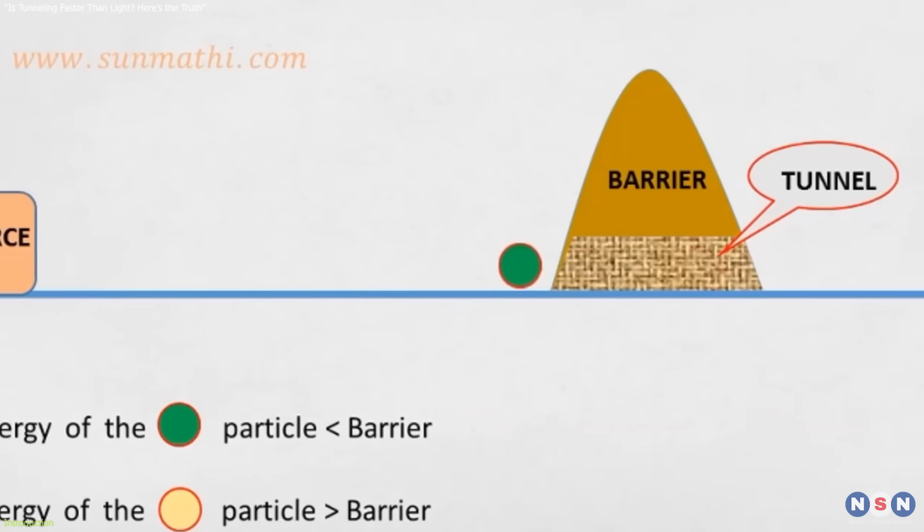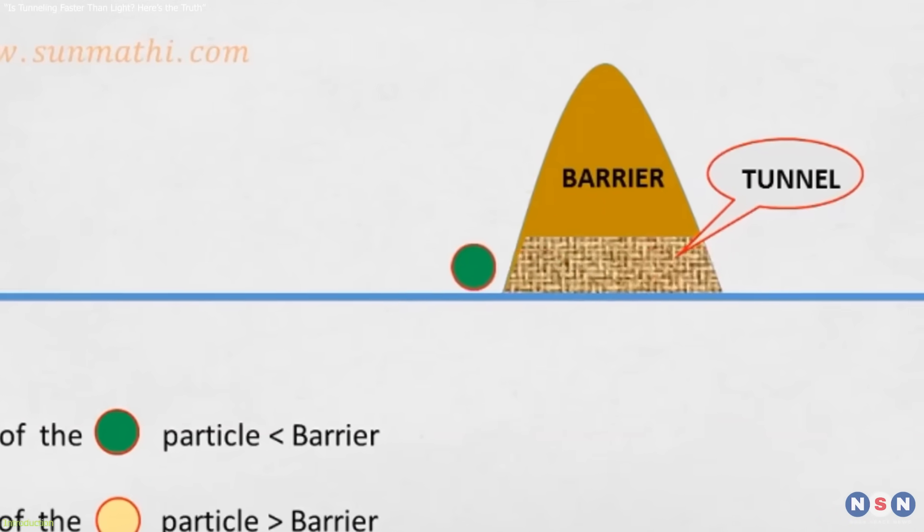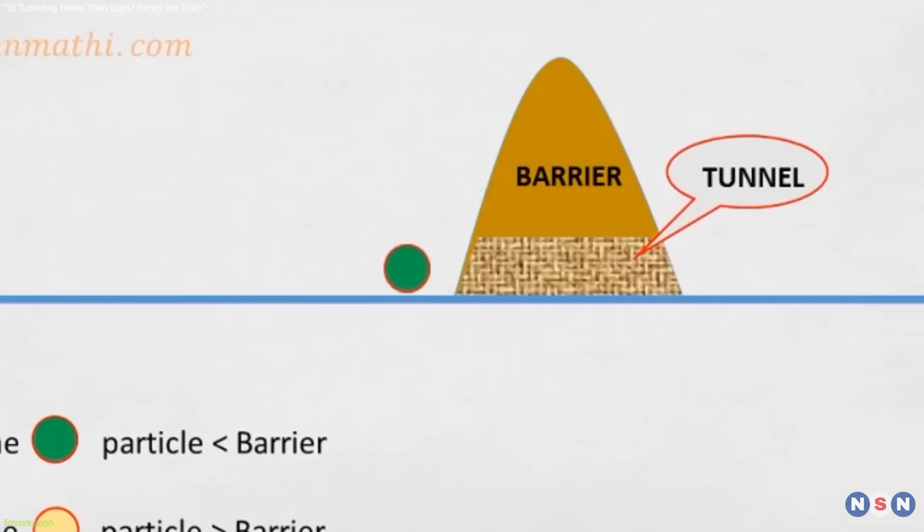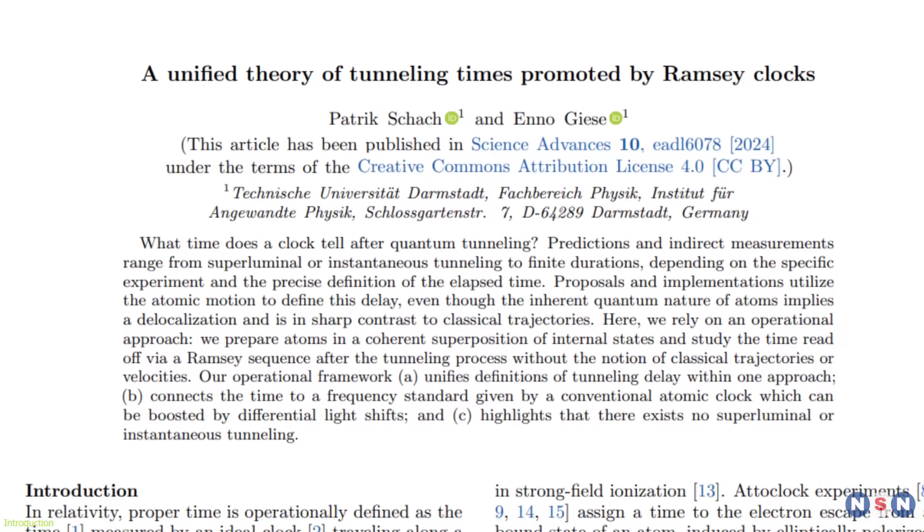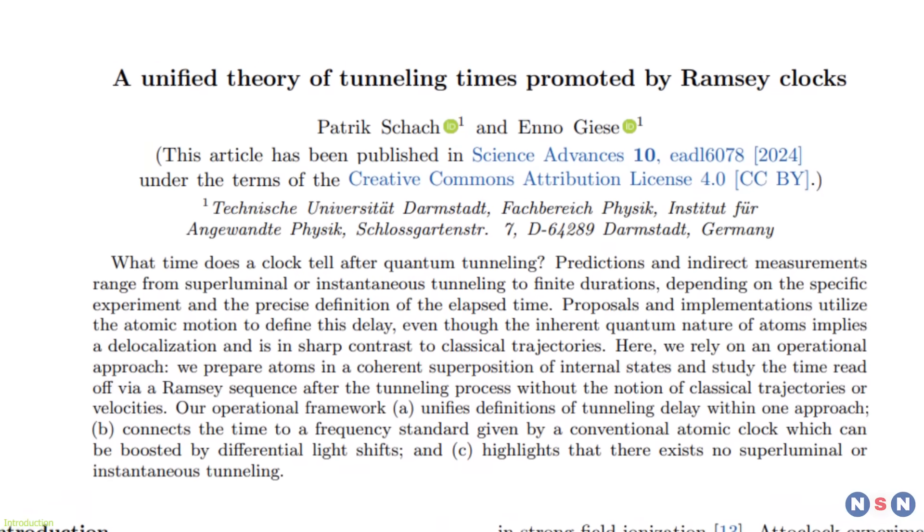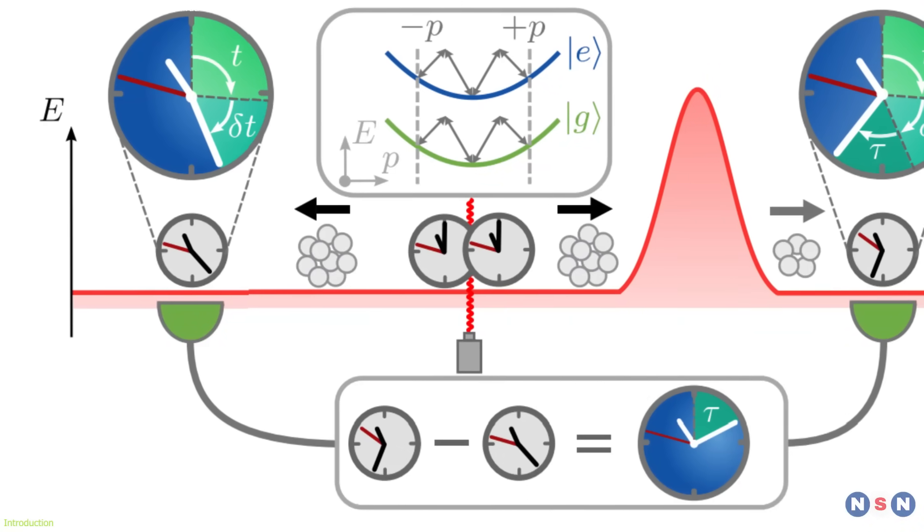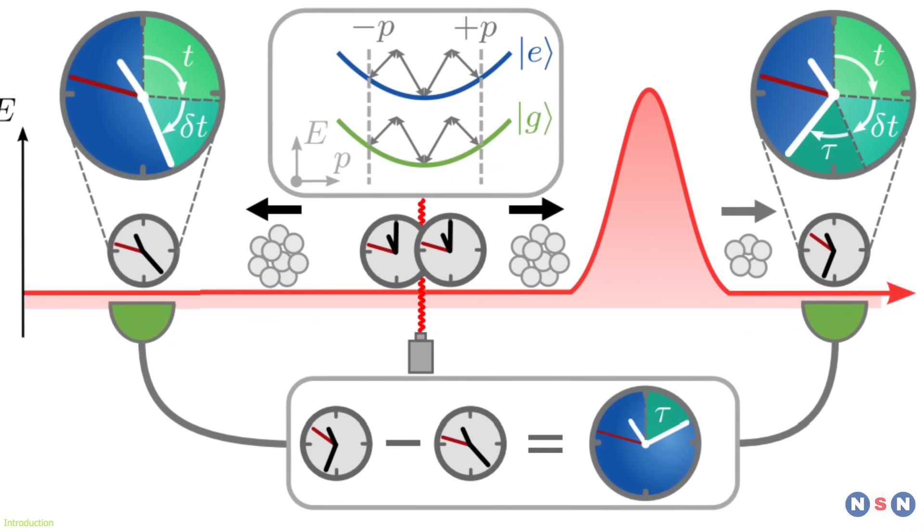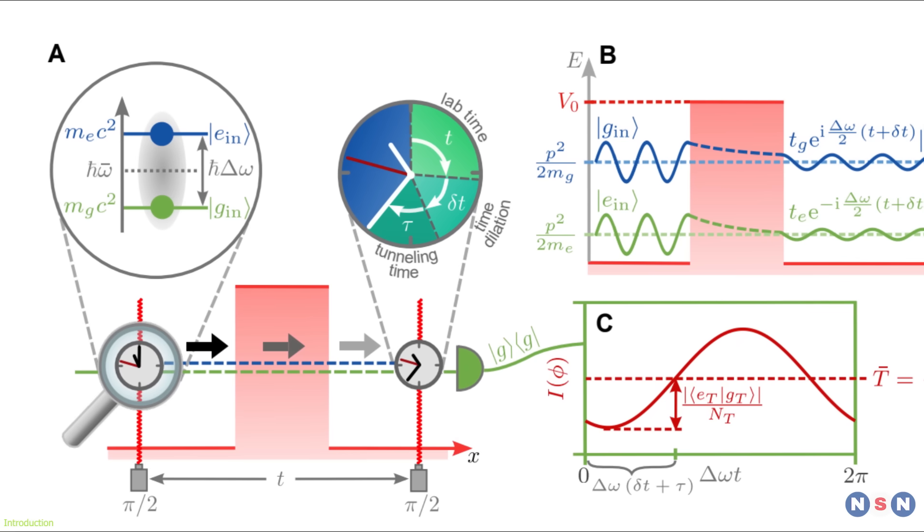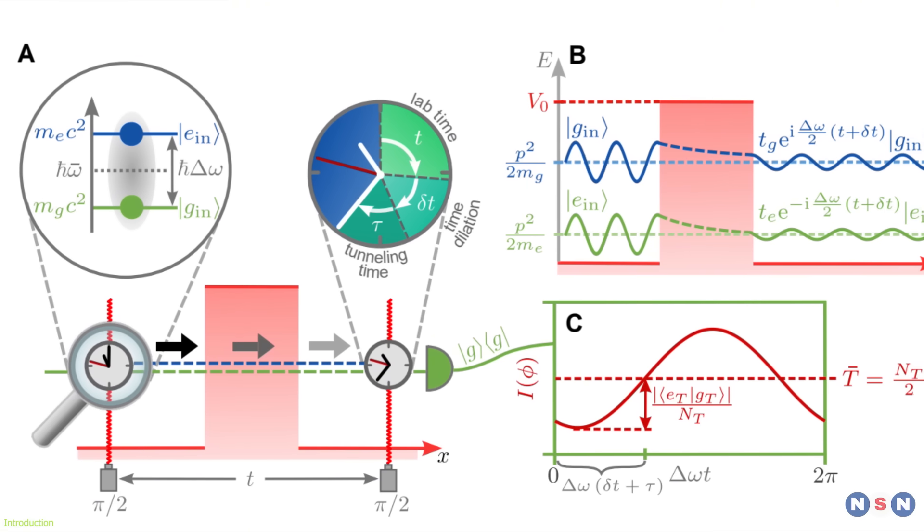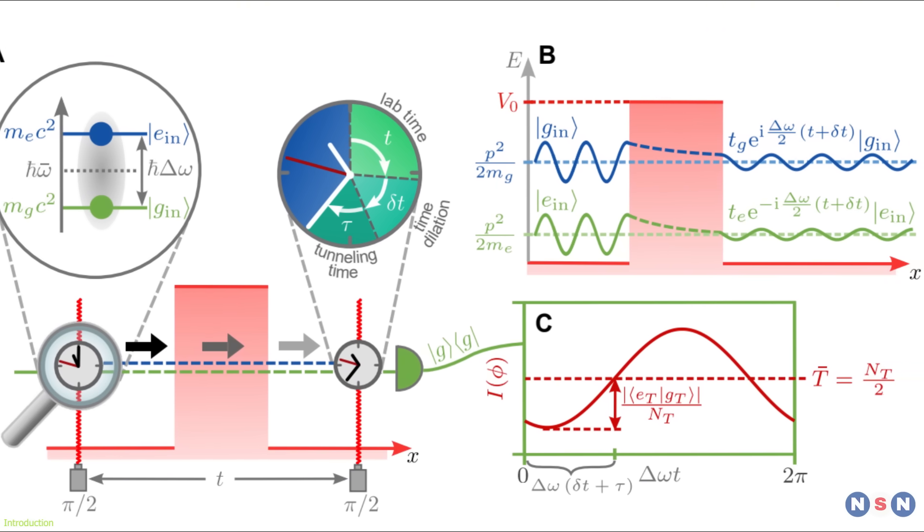For decades, scientists have debated whether tunneling happens in zero time or even faster than light. Now, a breakthrough study by Patrick Schack and N.O. Giese uses atoms as quantum clocks to measure tunneling time directly. Their method challenges old assumptions and opens new doors in physics and technology.